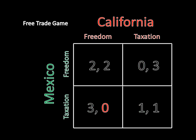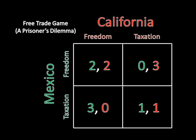We can do the exact same analysis for California but in reverse. California least prefers the outcome where it has free trade but Mexico taxes Californian products. California's best outcome is where California taxes Mexican products but Mexico does not tax Californian products. Similarly, free trade is better for California than the outcome where both mutually tax each other. As it turns out, this is called the free trade game, but it's just a prisoner's dilemma.